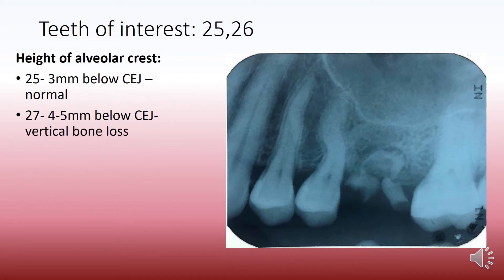Moving on to the height of alveolar crest: in case of 2-5 it appears reasonably normal, up to 3 mm below the CEJ. Whereas in case of 2-7 you can see about 4-5 mm of vertical bone loss.